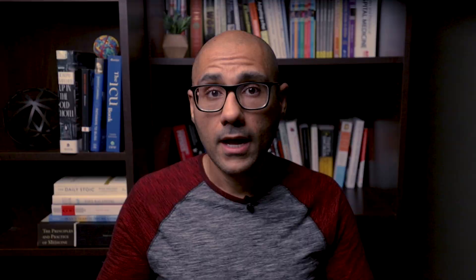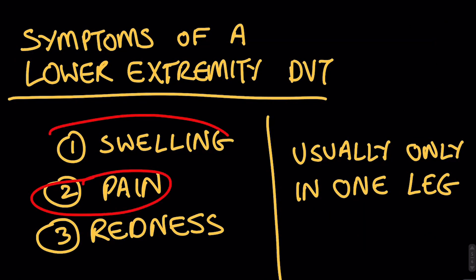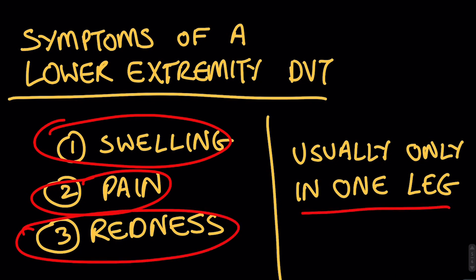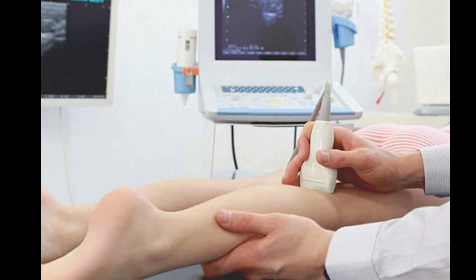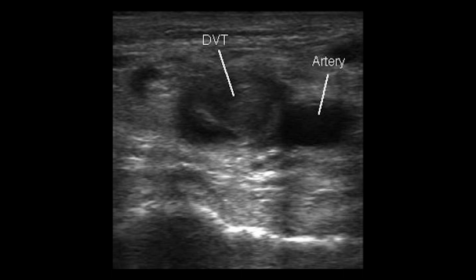Let's get the diagnosis of DVT out of the way first because that one is actually a relatively straightforward problem. It's PEs that are the more complicated diagnosis to work through. Most patients with DVTs will present with pain, swelling, and redness of the leg — usually just one leg, although it can be both. Any time a patient presents with these symptoms, an ultrasound of the legs is done. This is a relatively inexpensive and non-invasive test that clearly shows us what is going on in the deep veins — whether blood is flowing properly or there is a clot plugging things up.